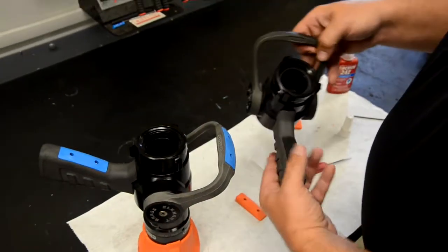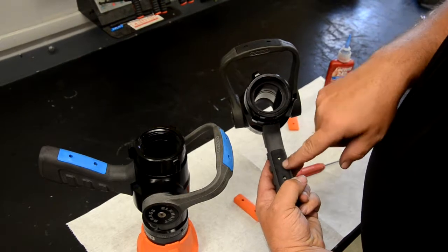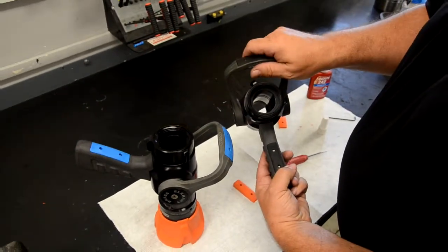This is the same procedure used when replacing the pistol grip and bail inserts on the Chief XD shutoffs as well.